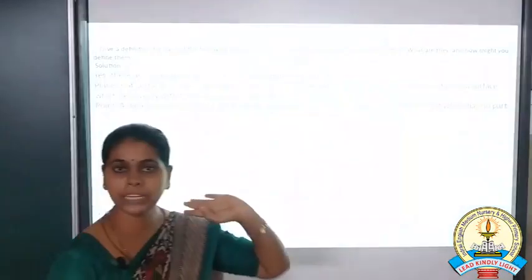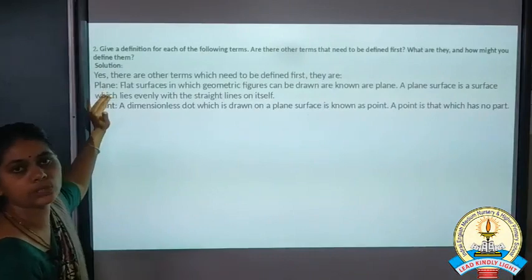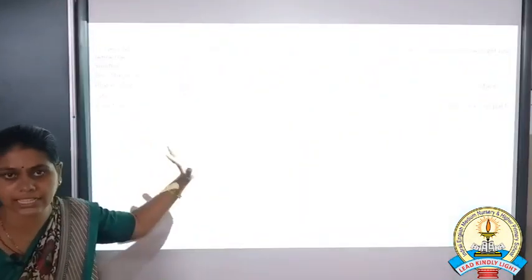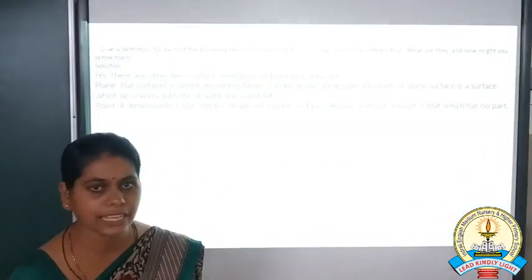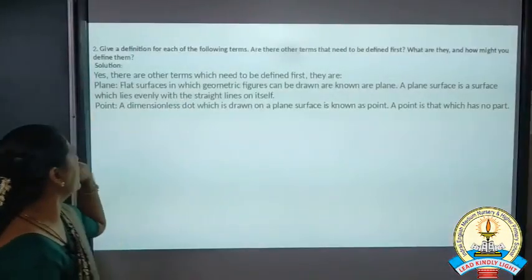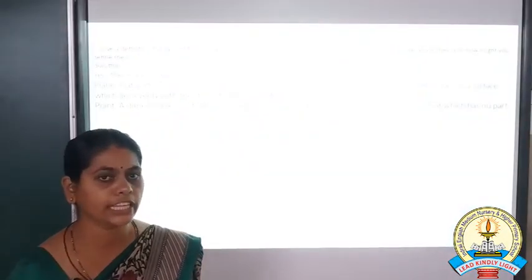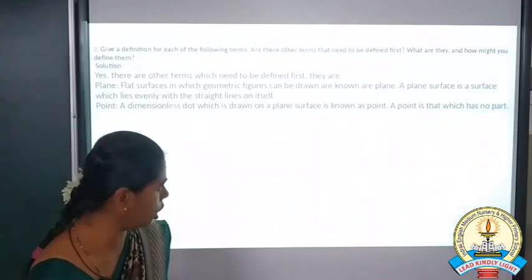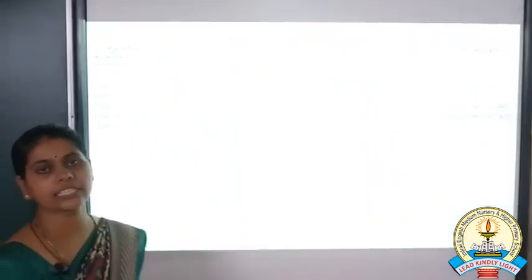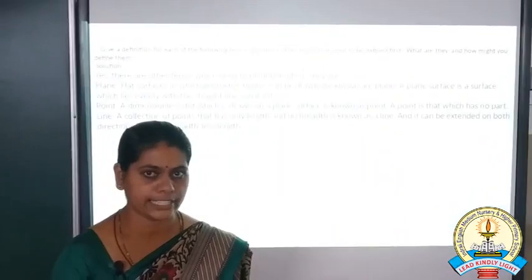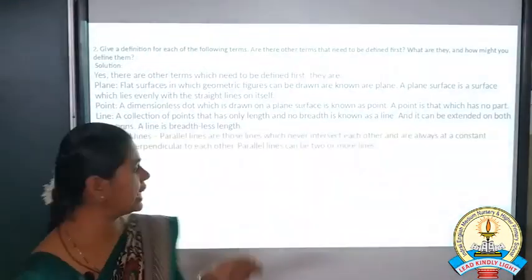There are other terms that should be defined first. They are: a plane — this you all learned in your previous class. Plane means a leveled place; a leveled place is called a plane. Next, a point — a point is just a dot; it cannot be subdivided into parts. And one more is a line — a line is a collection of points; a line segment is made up of different points.